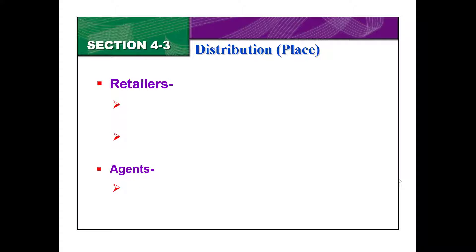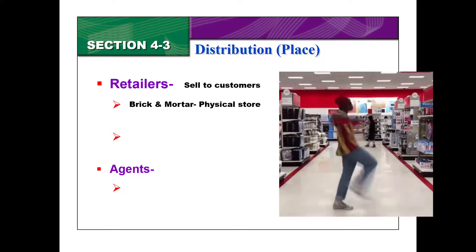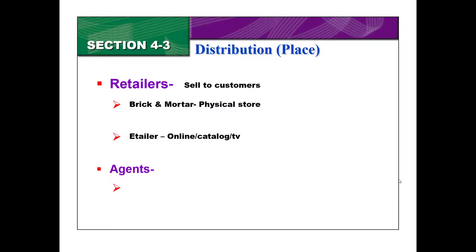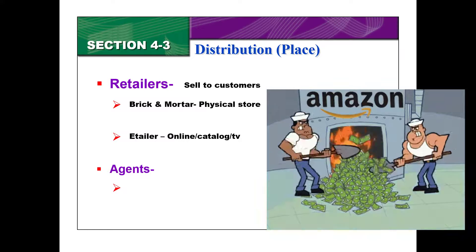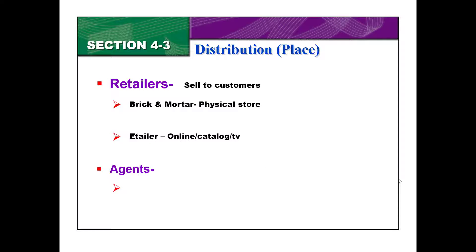The most common type of intermediary is a retailer — the store that sells to customers. There are two types of retailers. There is a brick-and-mortar retailer, which is the physical store, like going into Target. Or there are retailers that are e-tailers, meaning you buy online, via a catalog, or maybe off of TV. Target is a great example of both — you can go into the store or buy on Target.com. Amazon is a great example of an e-tailer only, since you can only buy online. Or a store could be only brick-and-mortar.